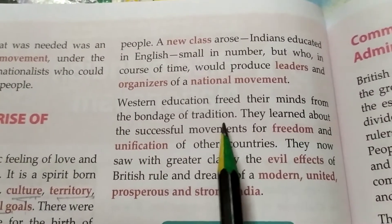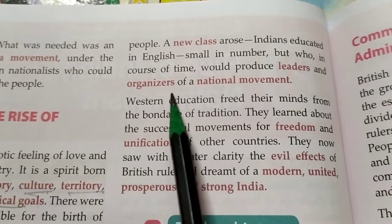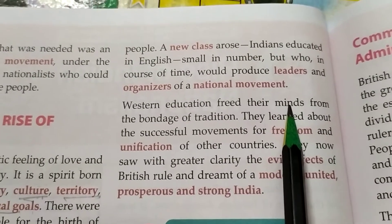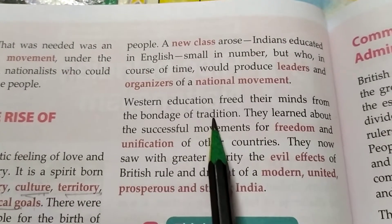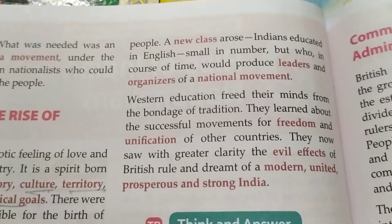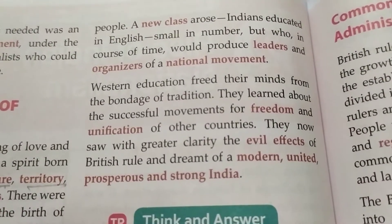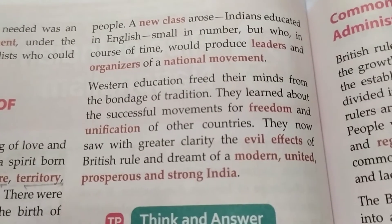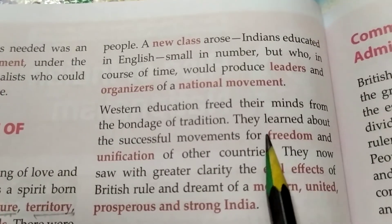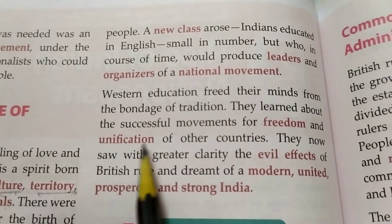Western education freed their minds from the bondage of tradition. That means whatever the evil practices we discussed in the previous chapter — child marriage, sati, ill-treatment of widows, and so on — the educated class moved beyond these.